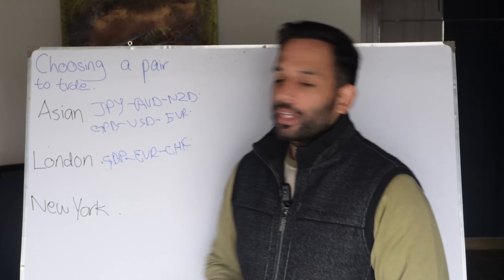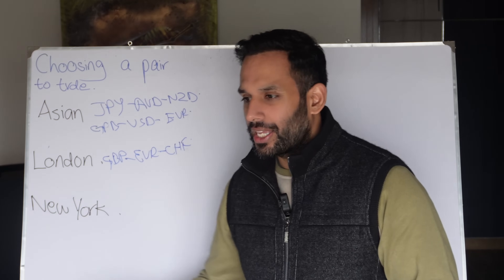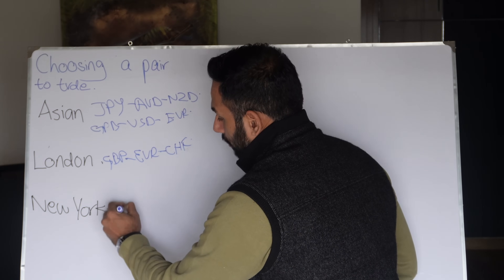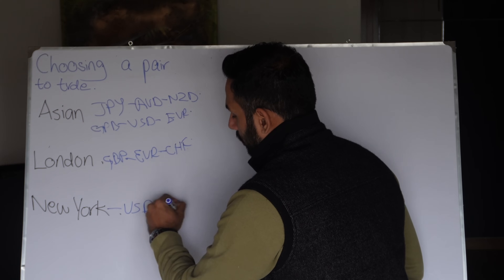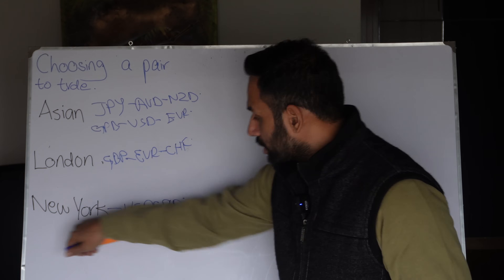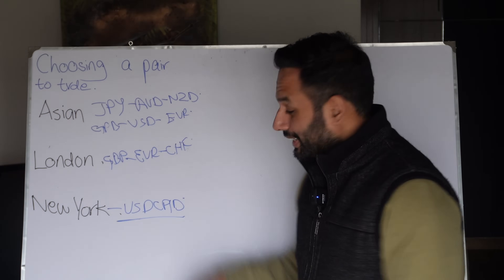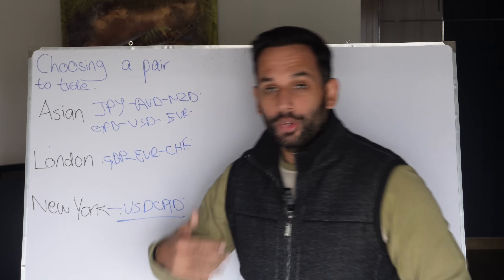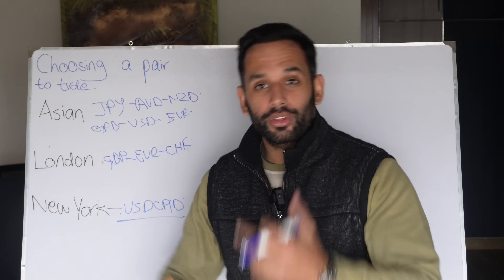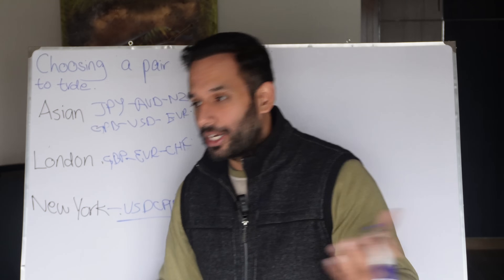Now someone might say: if you want more volatility or more movement in price, why can't we choose a currency pair moved by both currencies? For example, USD/CAD — in the New York session, both USD and CAD are open. So for USD/CAD to move, you'd need either the USD to be really weak or CAD to be really strong. For it to go bearish, you need USD weak and CAD strong, and vice versa.